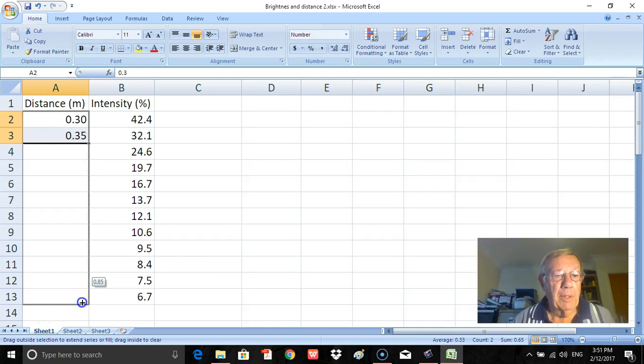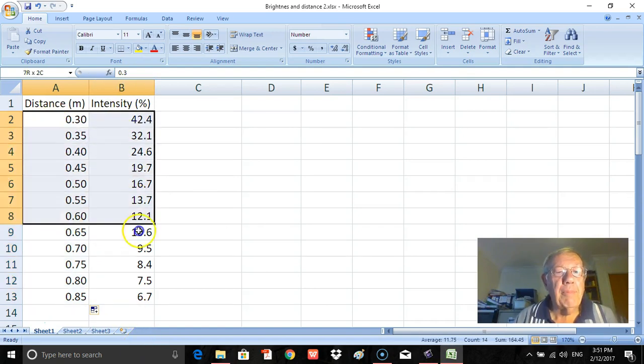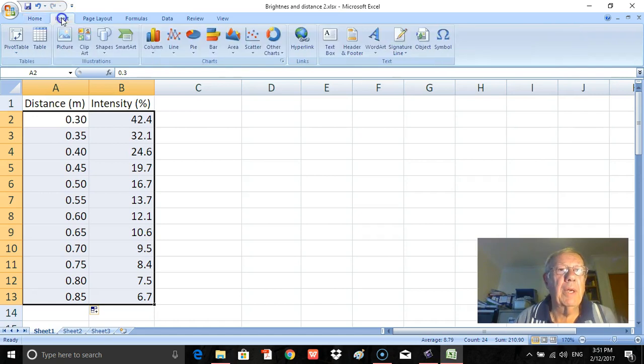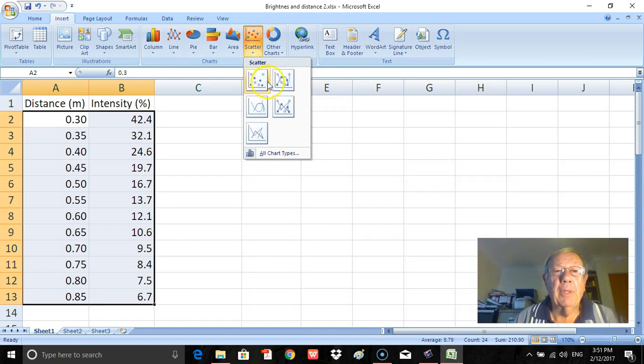So that's my data there. Now next step is to graph that, and the x-axis is going to be distance, the y-axis will be intensity. So if I select the data like that, go up here to insert, I need to insert a graph. So I'll click insert, go across here to where it says scatter and click that.